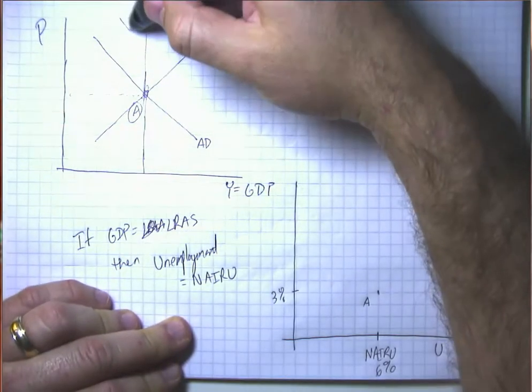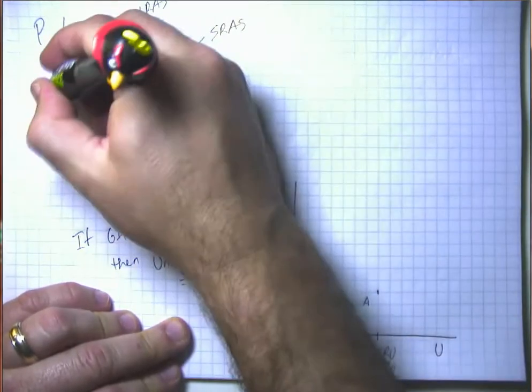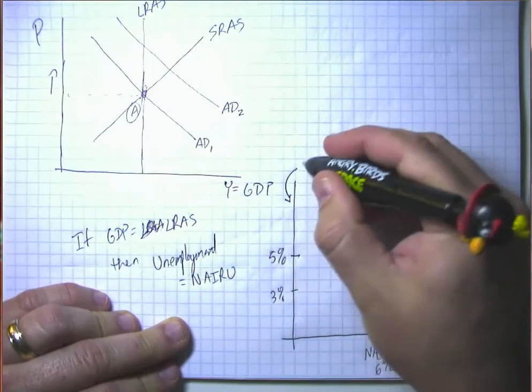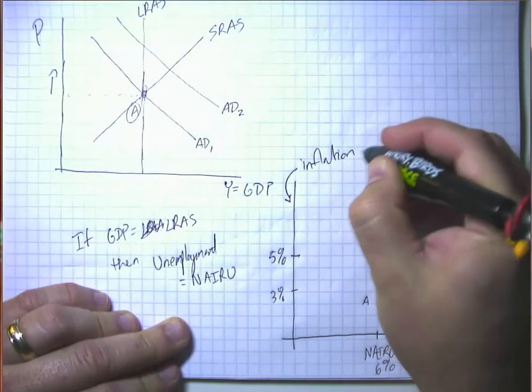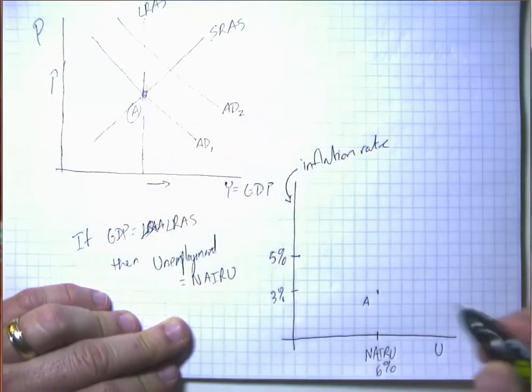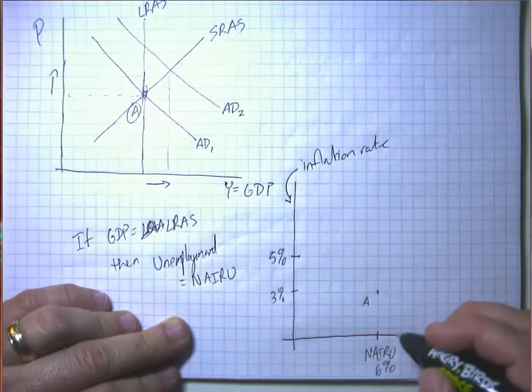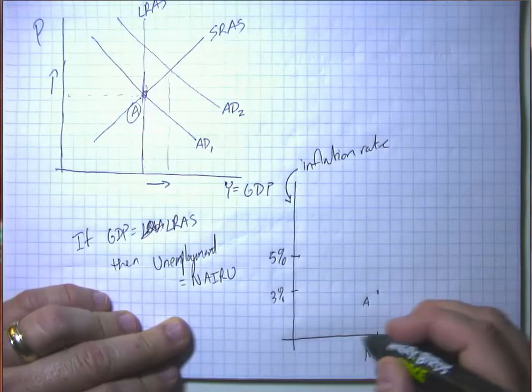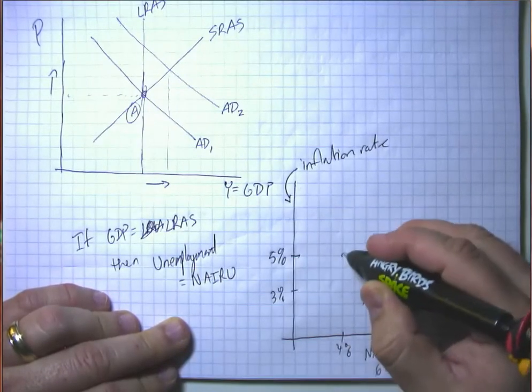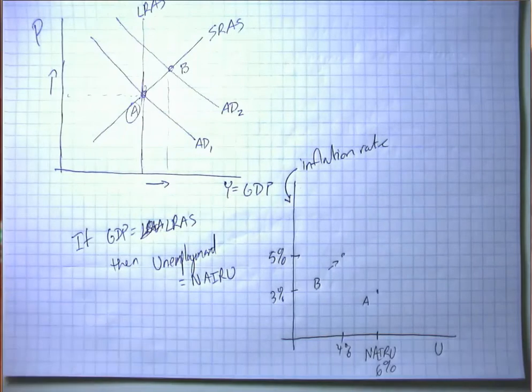If there's an increase in aggregate demand, then of course what happens is prices rise. So the inflation rate is higher. And there's also an increase in GDP. And when there's an increase in GDP, firms hire more workers to produce that extra output. So unemployment goes down, say from 6% to 4%. So this point B in this diagram corresponds to this point B in that diagram.